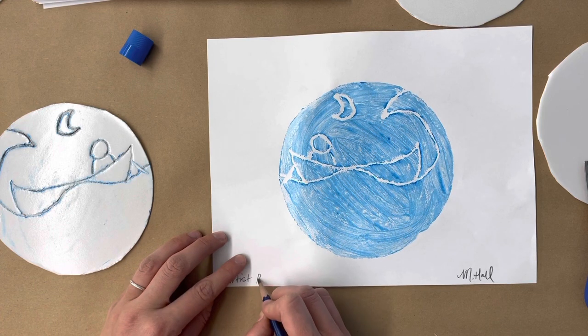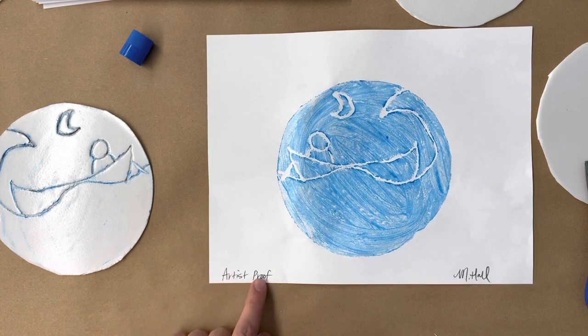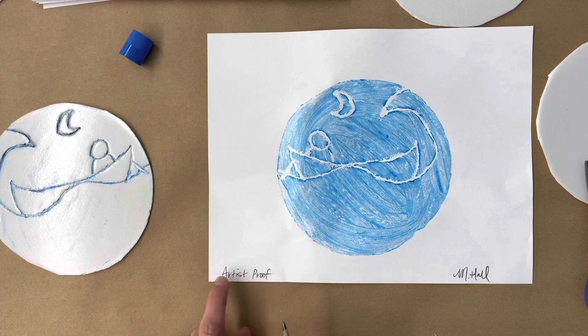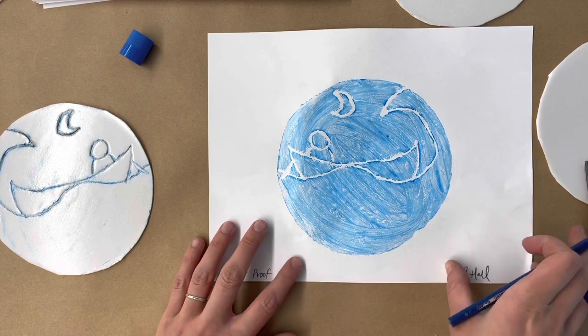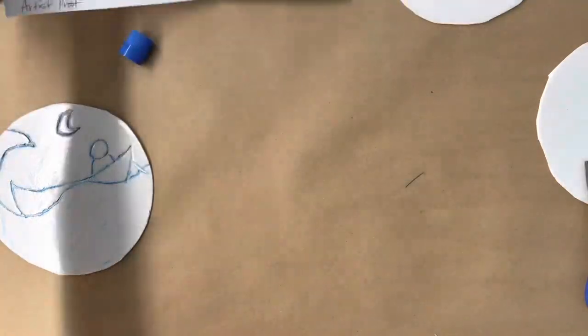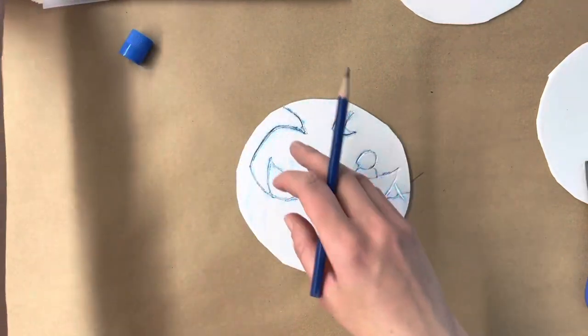And then on the side I could title it, or I could call this a printer's proof or an artist's proof. So I'll call it the artist's proof. What proof means, it's like a practice, so artist proof means like I'm practicing to see what it looked like.